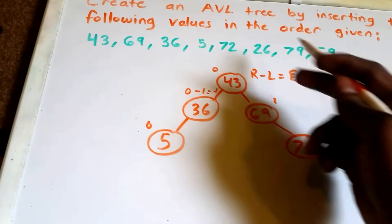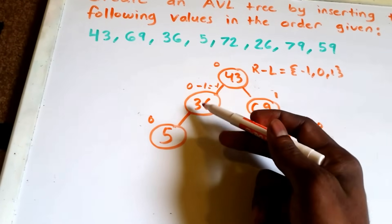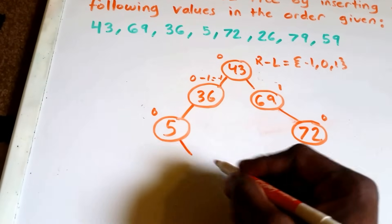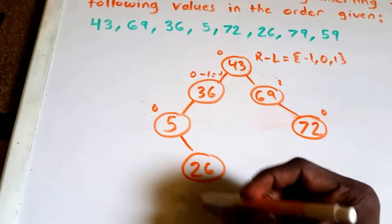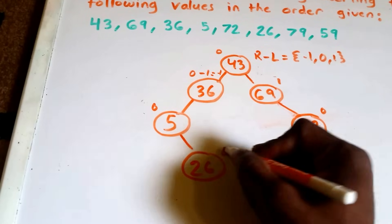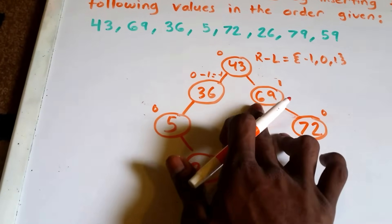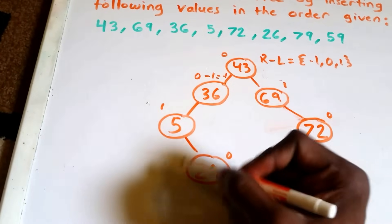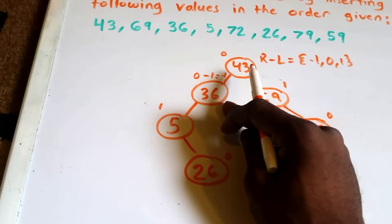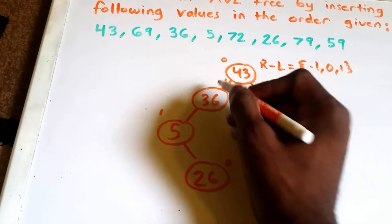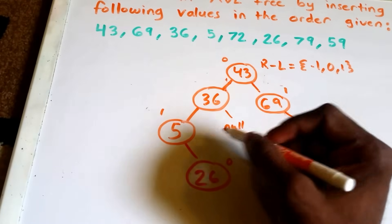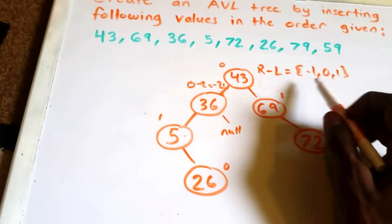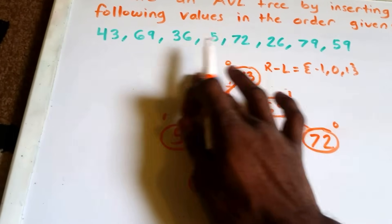Now we're going to insert the value 26. Since 26 is less than 43, we go left. Since 26 is less than 36, we go left again. But 26 is greater than 5, so we go right and insert 26 to the right of 5. Checking balance factors: node 26 is 0, nodes 69 and 72 are unchanged, and node 5 is 1 minus 0 = 1. For node 36, right minus left is 0 minus 2, which equals -2. That is not -1, 0, or 1, so we have a problem.